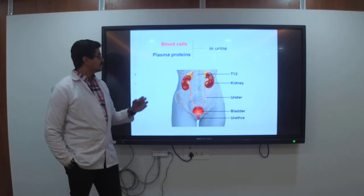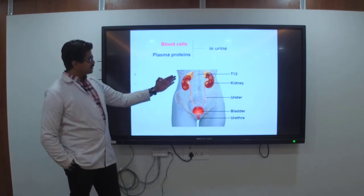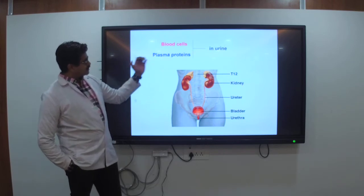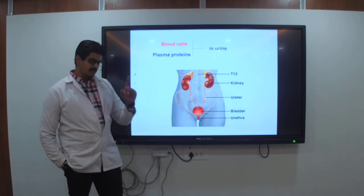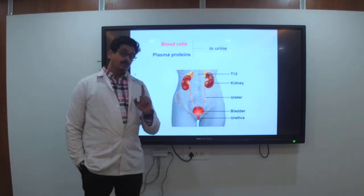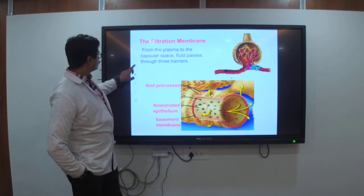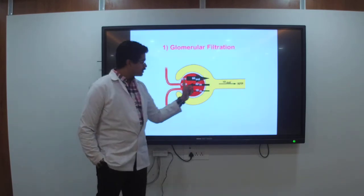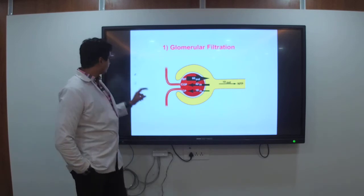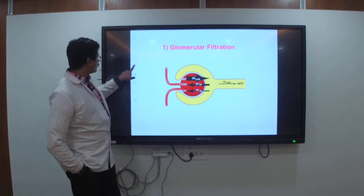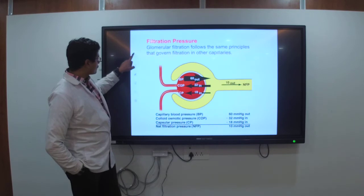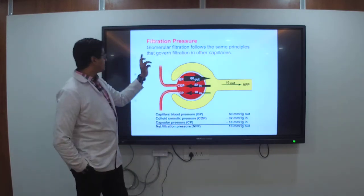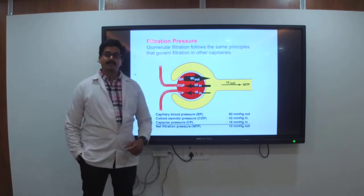In glomerular filtration, we are talking about blood cells and plasma proteins. The glomerular filtrate follows the same principles that govern filtration in capillaries. These include capillary blood pressure (BP) and colloid osmotic pressure (COP) — osmosis is the movement from higher concentration to lower concentration. It passes through the semipermeable membranes — the filtration membranes we have seen — the foot process. For a molecule to pass it should be no more than 3 nm; if larger, it will not pass.